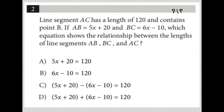I'm going to draw a line segment — a line segment just means it has a starting point and an end point. That line segment is called AC, so I'll label this as A and C. I'm told the length is 120, so I'll mark that as 120, and I'm told it contains B. I'm not told exactly where B is, so I'll put B here in the middle for now, but keep in mind I may move that B elsewhere.